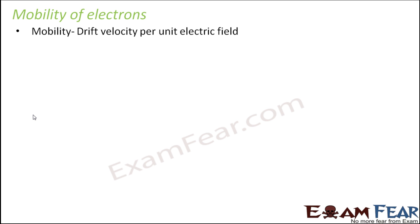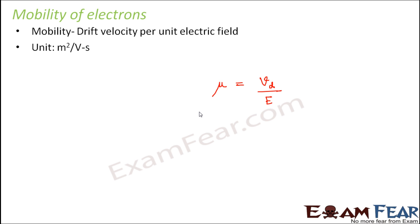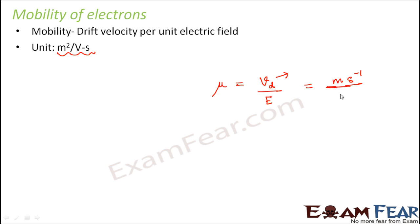Let us now quickly talk about mobility of electrons — that is, how mobile is the electron, how much can it move? Mobility of an electron is drift velocity per unit electric field, and is generally denoted by mu (μ). So μ = drift velocity / electric field. The unit to measure mobility is meter squared per volt-second. The unit for drift velocity is meter per second, and the unit for electric field is volt per meter, so dividing gives m²/(V·s).